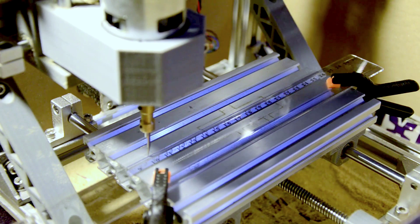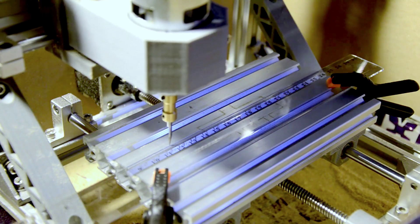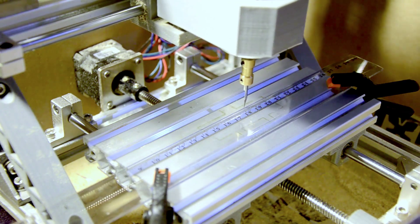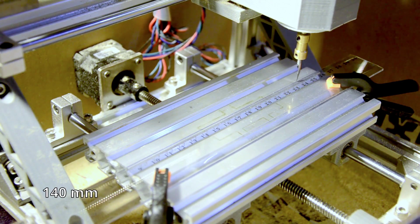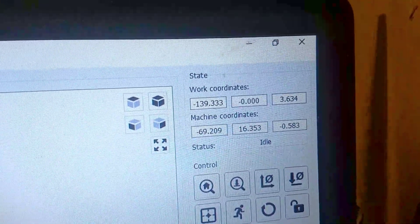Pick a starting point and zero the axis. Now move the tool a precise distance according to the ruler. I'm going for 140mm. Now we'll check the controller. How far does it think we've gone?